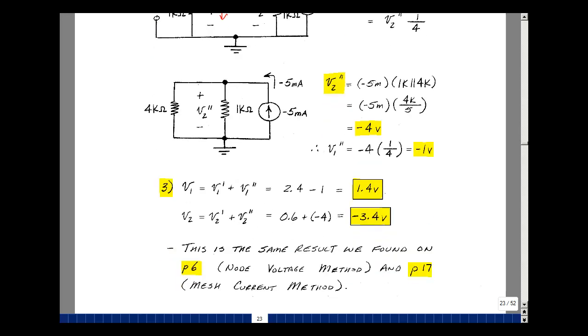And now we can add the two results up. This is our first value of V1, our first value of V2, our second value of V1, our second value of V2. And we get 1.4 and minus 3.4. These were the same results we found. We did the same problem back on page 6 and on page 17.